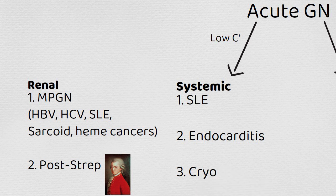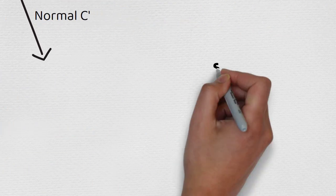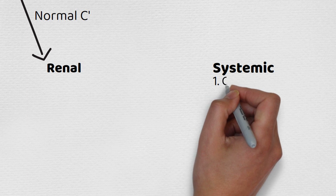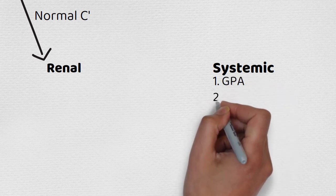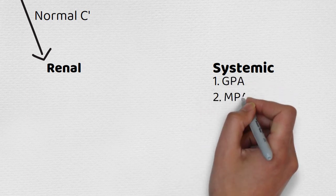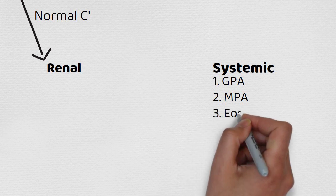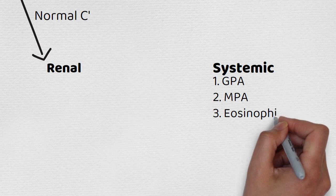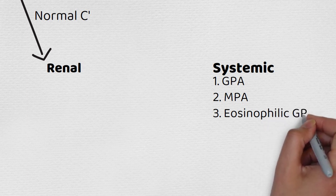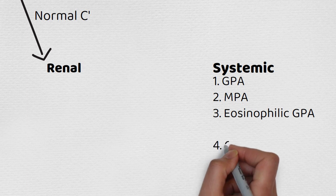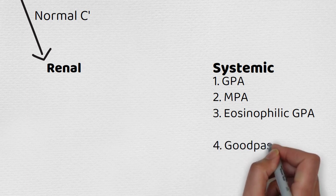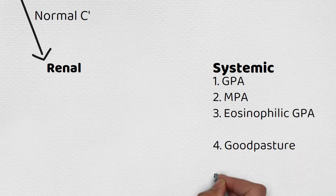When it comes to normal complement, we can again subdivide into systemic and renal diseases. Starting with the systemic arm, the first three are the ANCA vasculitides: granulomatosis with polyangiitis, microscopic polyangiitis, and eosinophilic granulomatosis with polyangiitis, formerly called Churg-Strauss. These are the pulmonary-renal syndromes. Next is Goodpasture's, another pulmonary-renal syndrome, and then Henoch-Schönlein purpura.